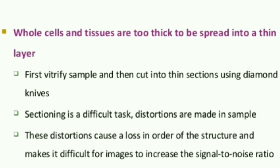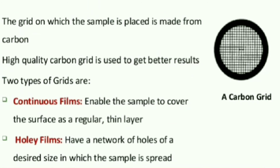Cryo sectioning also makes it difficult to achieve a good signal-to-noise ratio in the images. After cryo sectioning, the sample is placed over a grid. High quality carbon grids are used so that we get better results.